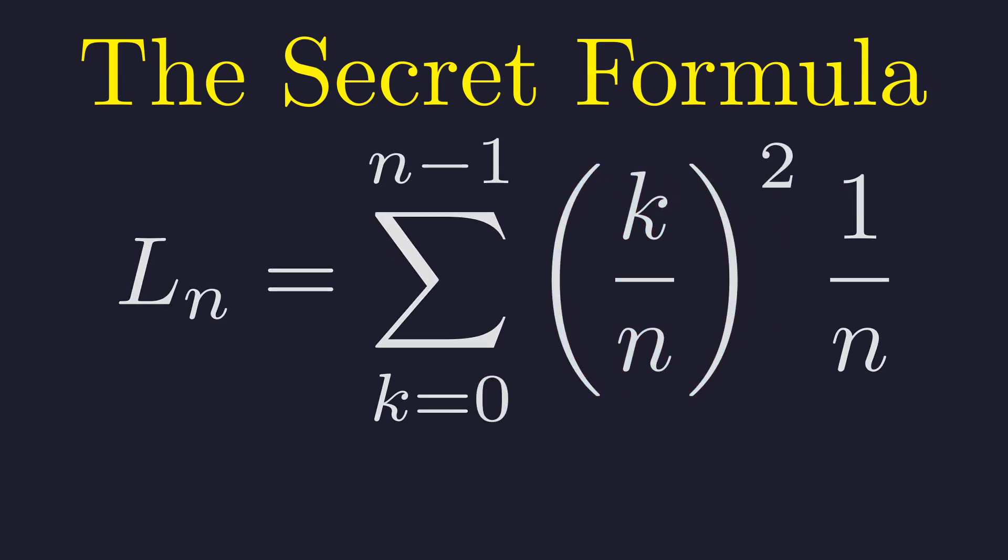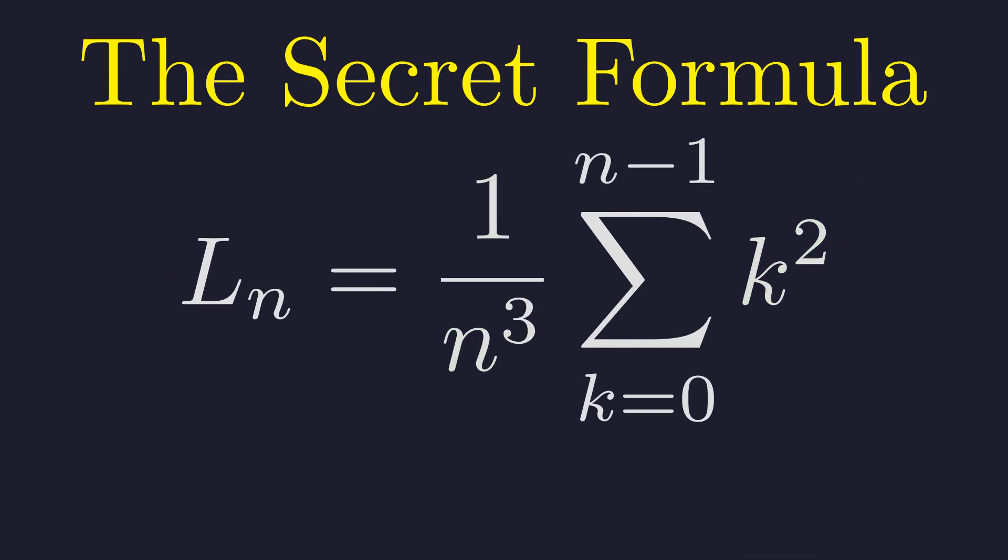Now we have k squared over n squared times 1 over n. Combine these. n cubed on the bottom. Factor out 1 over n cubed. Now we need this sum.